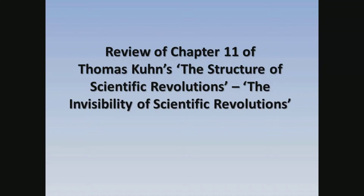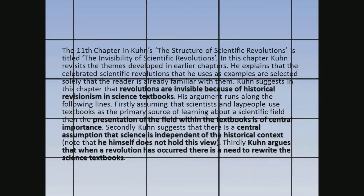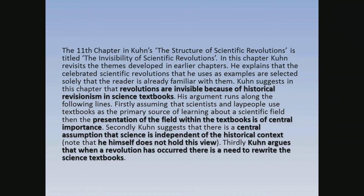The eleventh chapter in Kuhn's The Structure of Scientific Revolutions is titled The Invisibility of Scientific Revolutions. In this chapter, Kuhn revisits the themes developed in earlier chapters. He explains that the celebrated scientific revolutions he uses as examples are selected solely because the reader is already familiar with them.